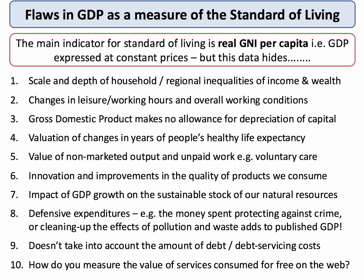Seven is an important one: sustainability. A big rise in economic growth could actually cause a degradation of our natural capital and have long-term economic consequences. Defensive spending is point eight — the idea that much spending is basically to protect against an economic or social bad, such as crime or spending to clean up the effects of pollution. That adds to GDP, but you wouldn't necessarily say that addressing these negative externalities represents an improvement in social welfare.